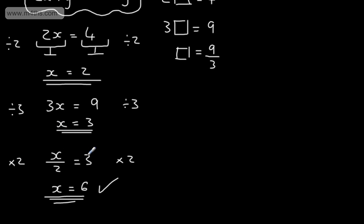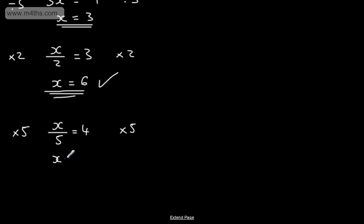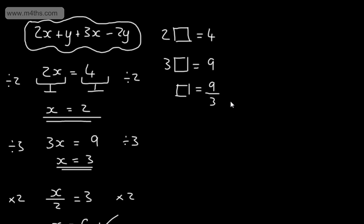For example, if I had x divided by 5 is equal to 4, we would multiply both sides by 5. So multiplying both sides of the equation by 5, x would give me 4 times by 5, which is 20. So this is when we have an unknown on one side.